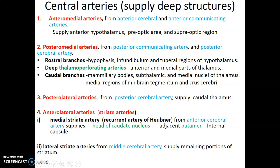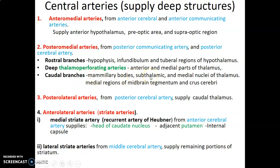Central arteries supply the deep structures in the brain. We have anterior medial arteries from anterior cerebral and anterior communicating arteries, which supply the hypothalamus, preoptic area, and supraoptic region. Then we have posterior medial arteries from posterior communicating and posterior cerebral arteries, with rostral branches to the hypophysis — the pituitary gland and its infundibulum — and the tubular regions of the hypothalamus. Deep branches form the thalamoperforating arteries, supplying the anterior and medial aspects of the thalamus. Caudal branches supply the mammillary bodies, subthalamus, medial nuclei of the thalamus, the midbrain tegmentum, and the crus cerebri.